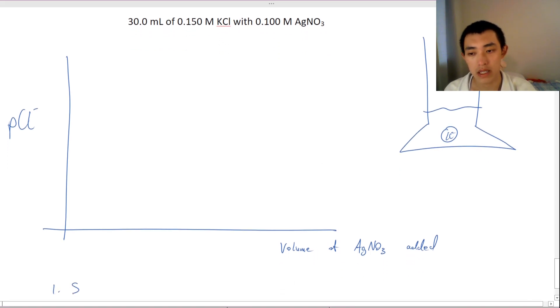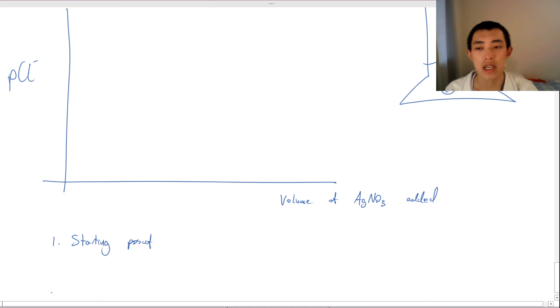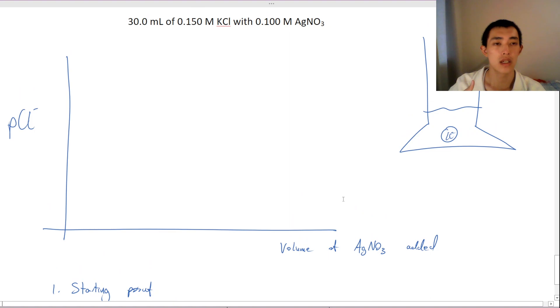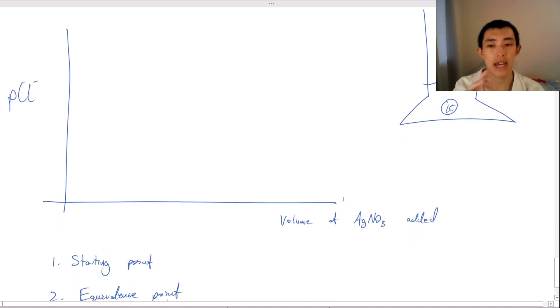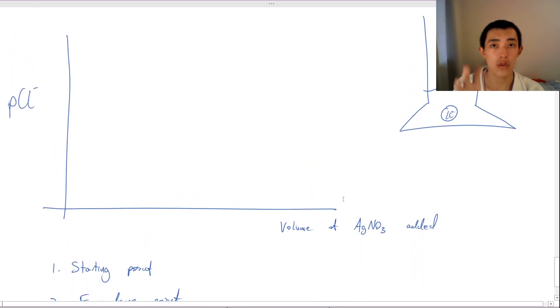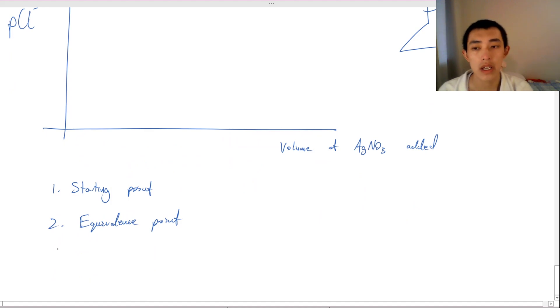So there's a few key points. We have number one is a starting point. So I haven't done anything. I haven't added any silver nitrate in. It's just original. And then we're going to have an equivalence point. So what is going to be the concentration of chlorine once I've added it, once I've fully neutralized all of the chlorine?